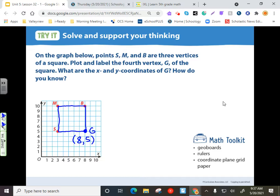So, how do we know? We know squares have four equal sides. And that's how we're able to determine that point.